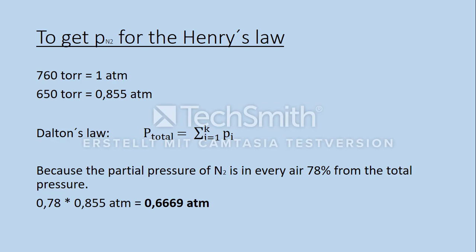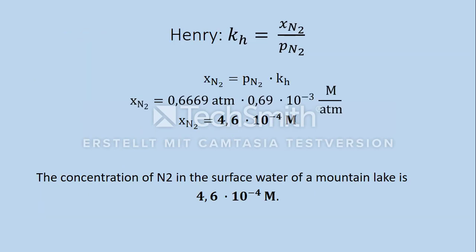As the final step we change the Henry's law to the formula. Pressure times Henry's constant is the concentration. We plug in Henry's constant and the partial pressure in the law and we get a concentration of 4.6 times 10 in power of minus 4 mol per liter of nitrogen in the surface water of the mountain lake.